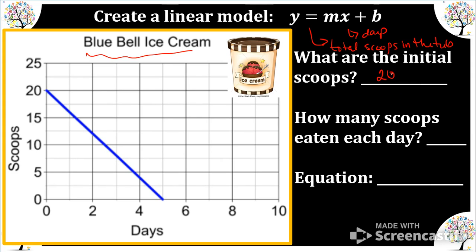How many scoops eaten each day? So let's pick two points. So we have zero comma twenty. This point and then we can have when the ice cream is gone on day five. And our rate of change is zero minus twenty over five minus zero. We get negative twenty over five, which is negative four. So four scoops are eaten each day. We're going to include the negative with our linear model.